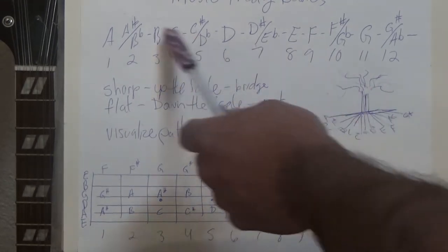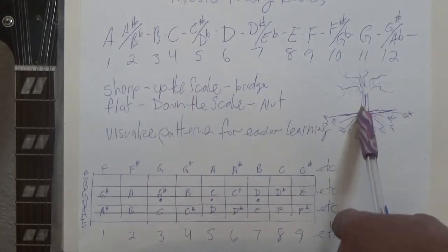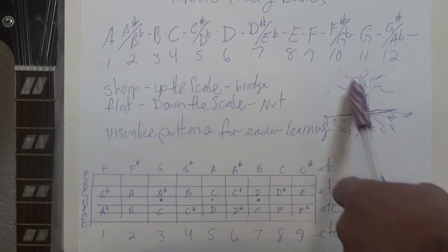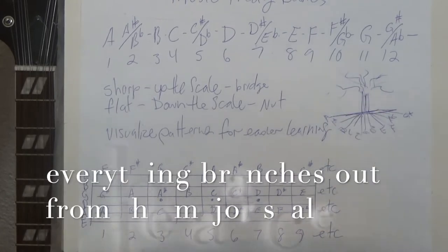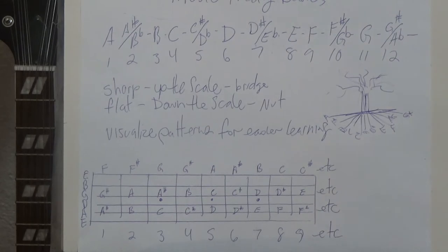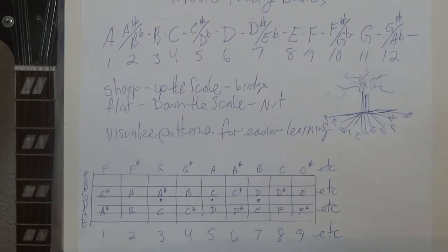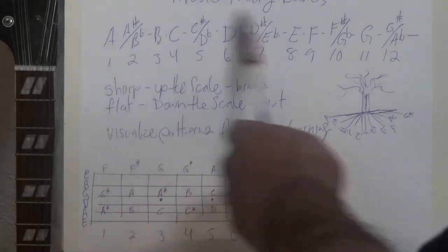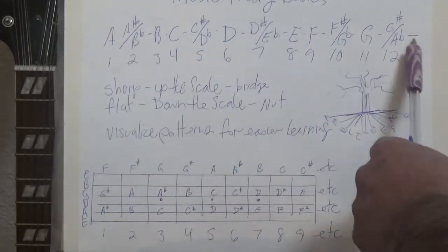So that's eight notes taken out of these 12 notes. And then everything branches out from that — all your other chords and your scales branch out from the major scale. That's why you learn the major scale. That's that Do-Re-Mi that you learn when you're a child in school. And of course not everybody learns that because they don't do music in school anymore.